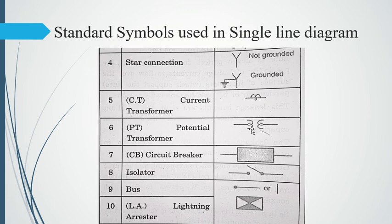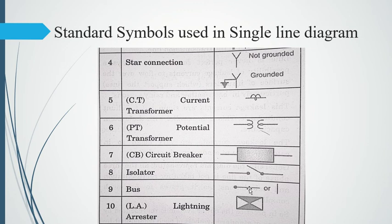For a potential transformer (PT), we connect wire coils — one reason we use the coil-based method specifically for PT. For a circuit breaker, we use a specific symbol. For an isolator, we use a switch-like symbol — but don't mistake it for a switch; it will always appear around a circuit breaker in a diagram. A bus is represented by a straight line, either vertical or horizontal. A lightning arrester uses an hourglass-shaped symbol.